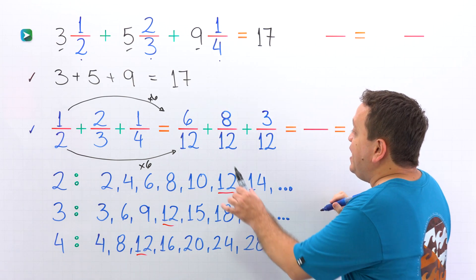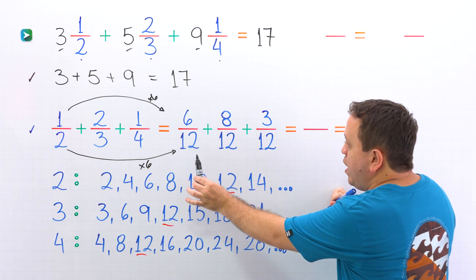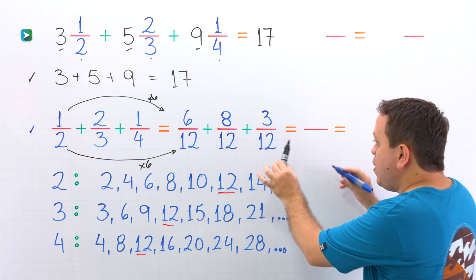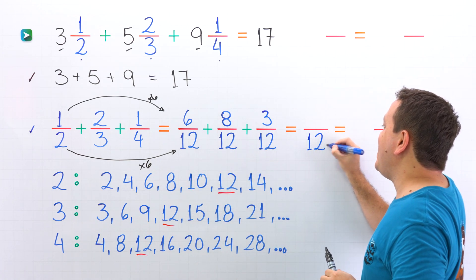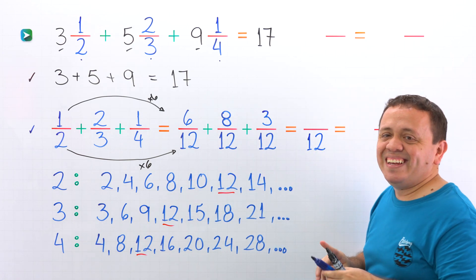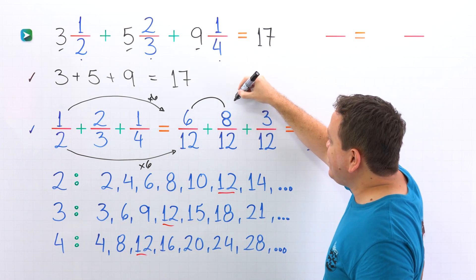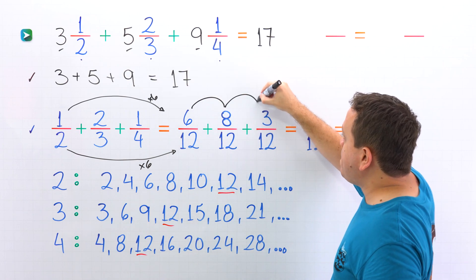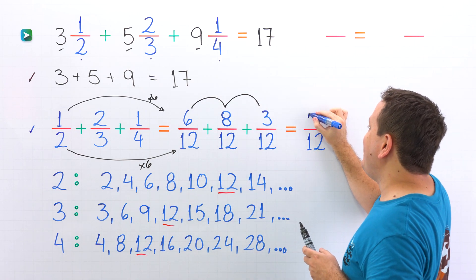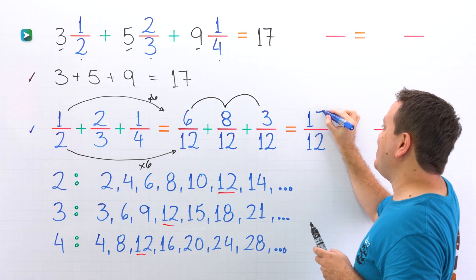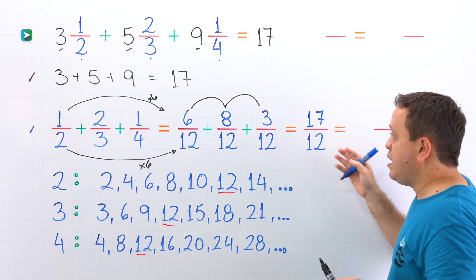Nice! Here we have three fractions with the same denominator: twelve, twelve, twelve. We write twelve one more time and continue by adding the numerators. Six plus eight is fourteen, plus three gives us seventeen. The resulting fraction is seventeen twelfths.